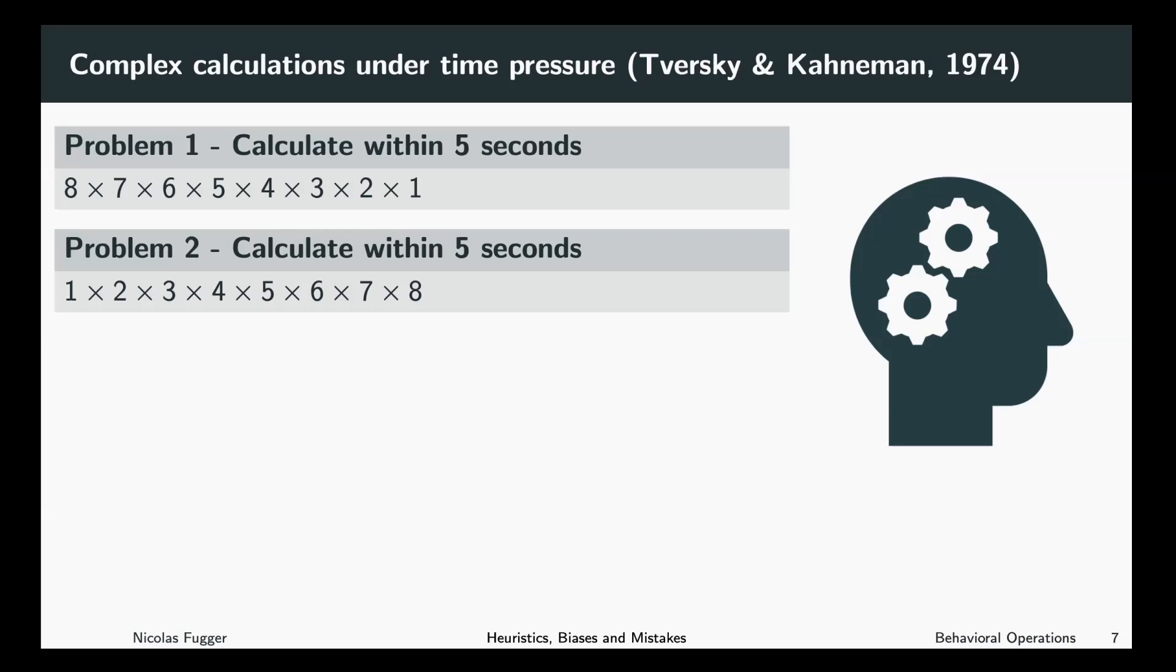Their subjects were asked to calculate the product 1×2×3×4×5×6×7×8. As I said, both questions are obviously too hard to be calculated within five seconds. And here we want to understand how anchoring might be correlated, connected with the use of heuristics.